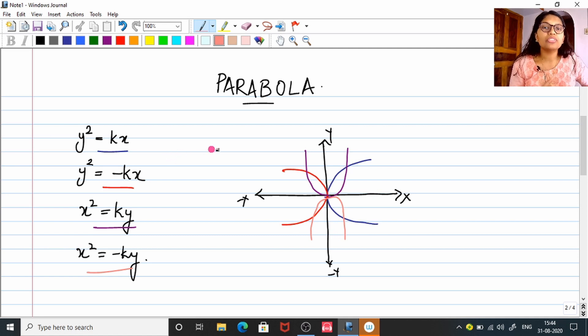Do not get confused while drawing this because you are just going to enclose the axis whose variable is having the power 1. See, here x raised to 1, so we enclose the positive x-axis. Here x raised to 1, so enclose your negative x-axis. Likewise, here y raised to 1, so enclose your positive y. Here negative y raised to 1, so enclose your negative y-axis.